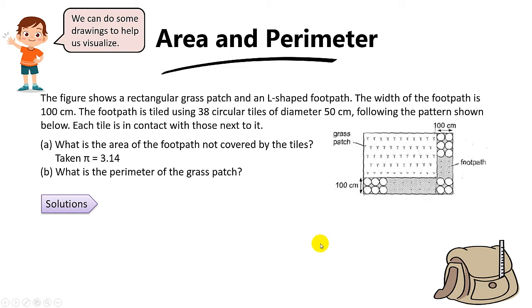Hi there, welcome back. Let's go through one more challenging question on area and perimeter. This question is from a past PSLE map paper. The diagram shows a rectangular grass patch and an L-shaped footpath.